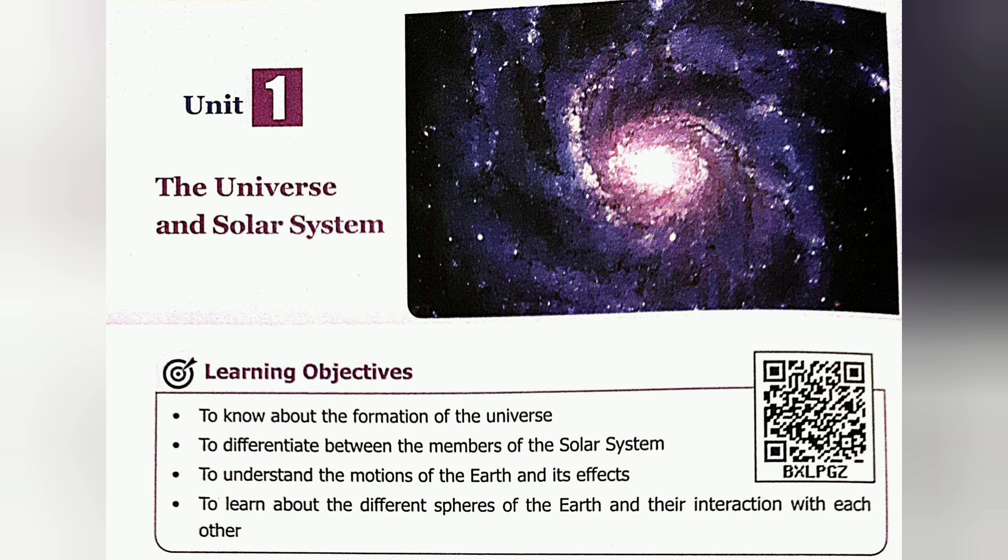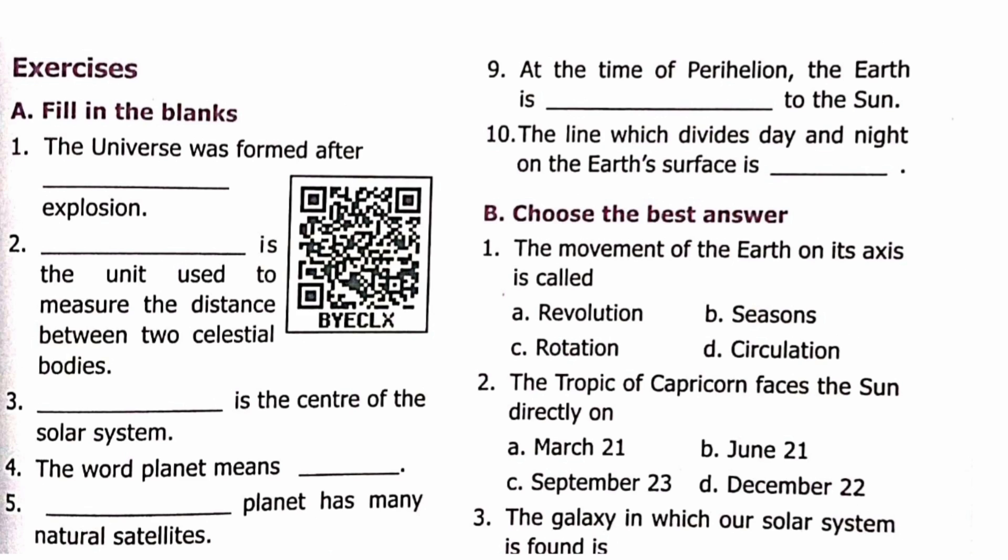6th Standard Social Term 1 Geography Unit 1: The Universe and Solar System. Book Back Exercises. Section A: Fill in the Blanks.